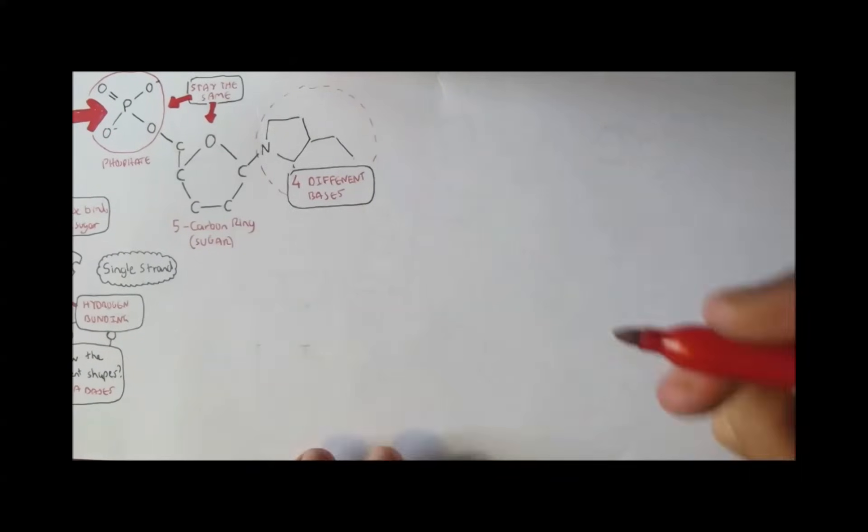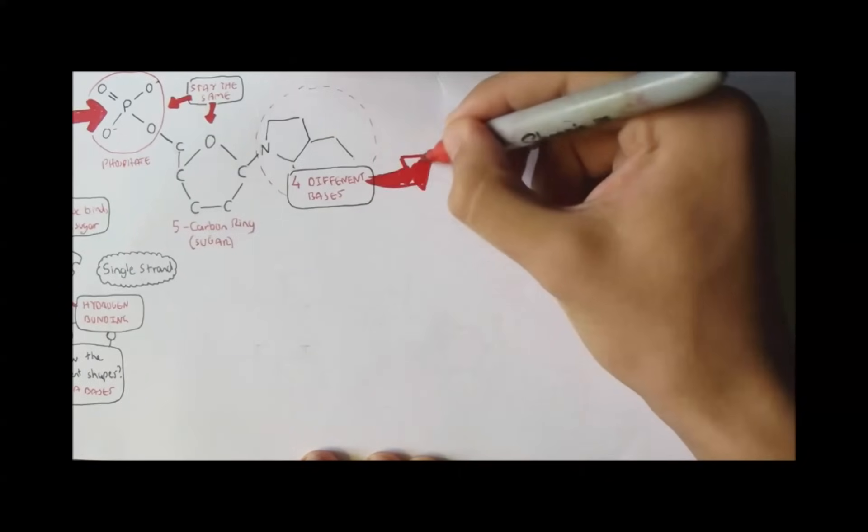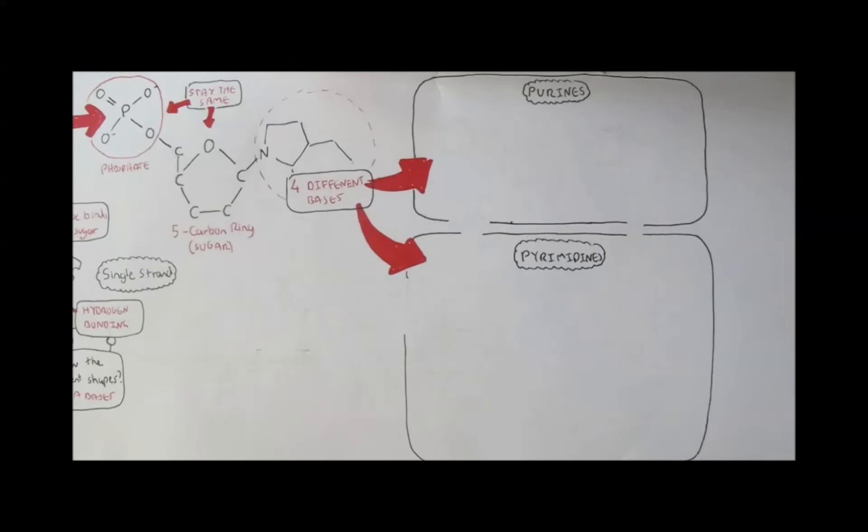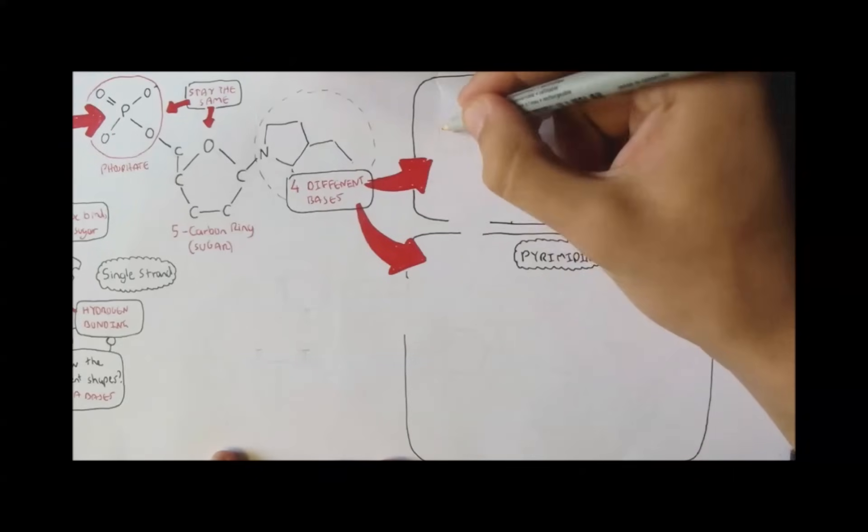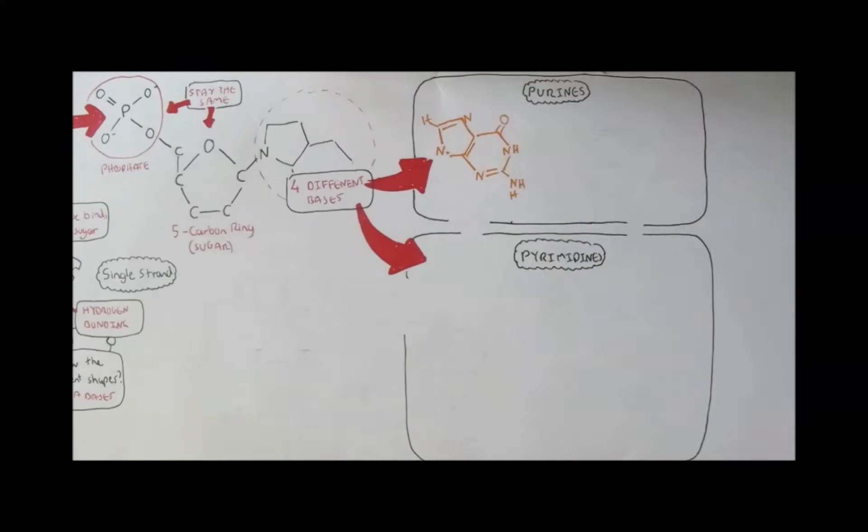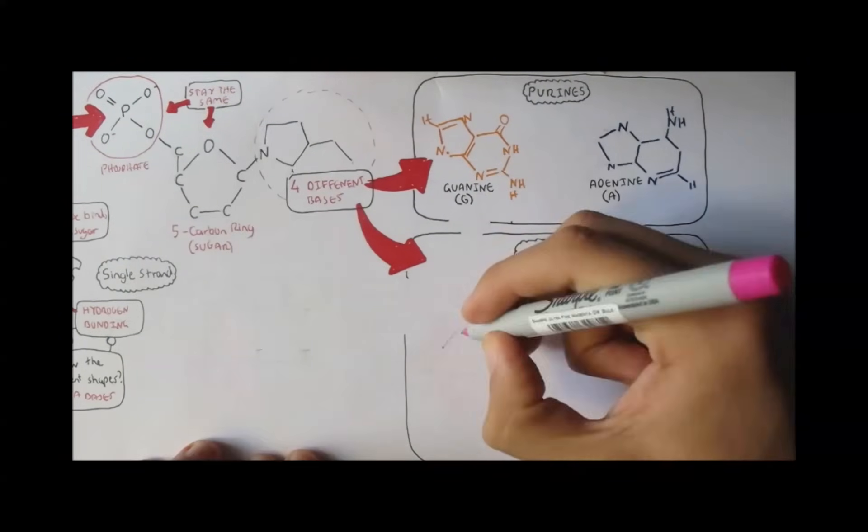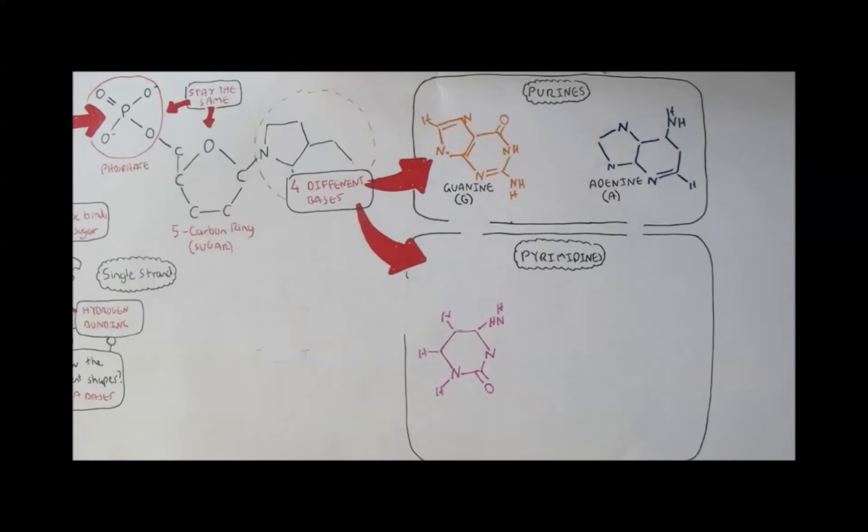Now there are two classes of bases. There are the purines and the pyrimidines. They all contain four nitrogen molecules in their structure. The purines consist of the bases guanine, also denoted as G, and adenine, denoted as A. Pyrimidines consist of cytosine, or C, and thymine, also known as T.